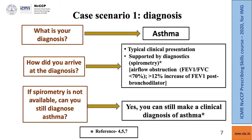The diagnosis is asthma. The patient had typical clinical presentation — cough, wheezing, chest tightness — supported by spirometry demonstrating airflow obstruction (FEV1/FVC ratio less than 70%) and bronchodilator reversibility (FEV1 improvement of more than 12%). If spirometry is unavailable, or for a child under 7 years where spirometry cannot be performed, a clinical diagnosis of asthma can be made but should be verified by spirometry. Please refer to references 4, 5, and 7 given at the end of this section.